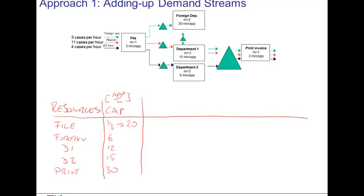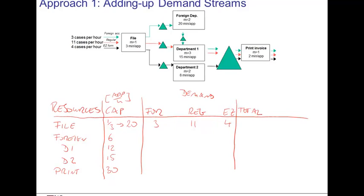Next, we ask ourselves what the demand for service is at each of the five resources. There are three types of demand: foreign accounts, regular accounts, and easy accounts. Each of these three flow units contributes to demand at various resources. At the filing department, we have three units of foreign accounts, eleven units of regular accounts, and four units of easy accounts — a total demand of three plus eleven plus four equals eighteen units per hour.